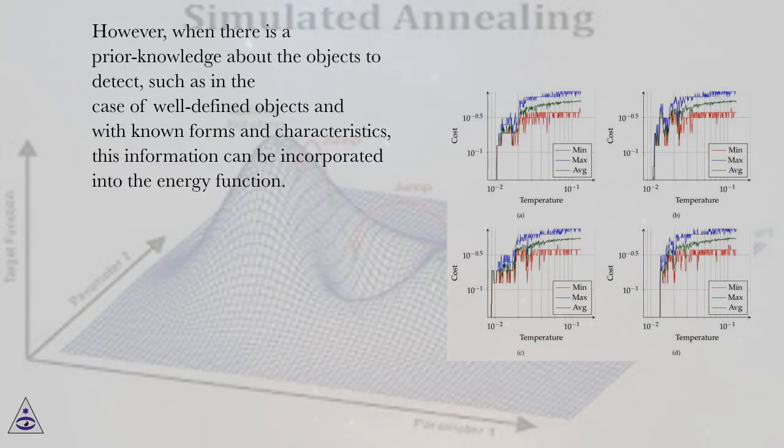Several techniques have been employed to improve these aspects, such as characteristic extraction techniques and improvements in the energy function. However, when there is prior knowledge about the objects to detect — such as well-defined objects with known forms and characteristics — this information can be incorporated into the energy function. Approaches like deformable templates use templates defined a priori and transform the deformation problem into a template adjustment problem. Though this produces good results, it suffers from rigidity due to the templates. Incorporating more information in the energy function for images of knots can significantly improve the quality of final contours.